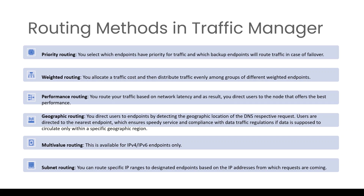In case of geographic routing, you will assign certain countries to one application and another set of countries to another application. So if a user is trying from a particular location and you have already assigned that location to one of the applications, the traffic will always go to that particular application — not to another. That is geographic routing.